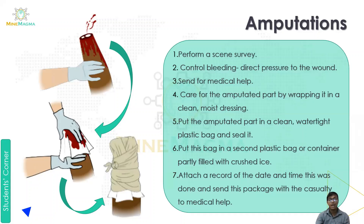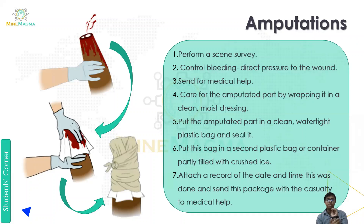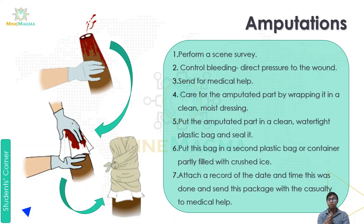Now we are going to look at amputations. Amputation is basically when any body part is completely cut off from our body — separated from the body — it is called amputation. In such an injury, we need to know what actions or first aid we should perform.